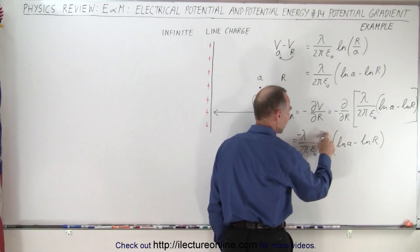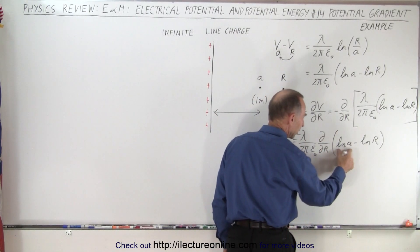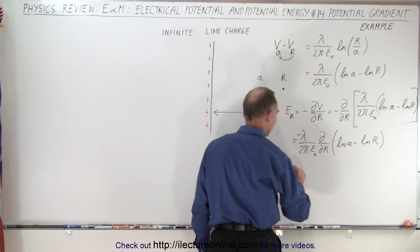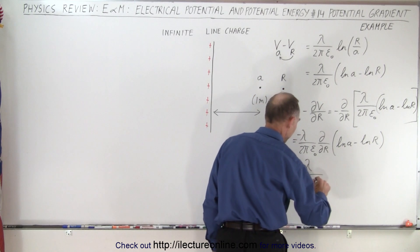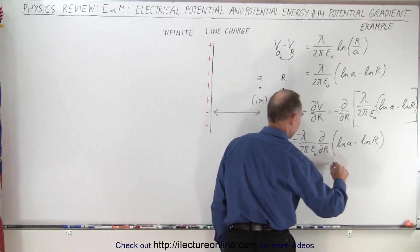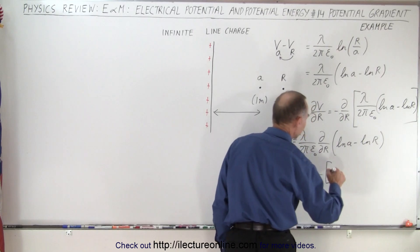This becomes equal to minus the linear charge density divided by 2πε₀ times 0 minus—and the partial derivative with respect to R of the natural log of R is 1 over R.